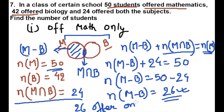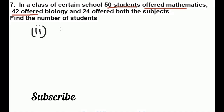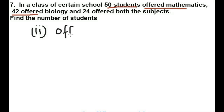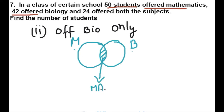Only mathematics — this part gives us 26. Now our next question is the second part. Offering biology only. Let's draw the Venn diagram again. This is the set of mathematics and this is the set of biology. This is the mathematics set, this is the biology set, and this is the common part — the M intersection B part.